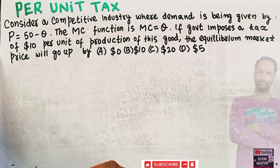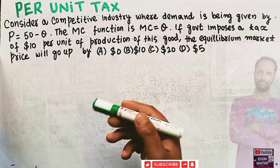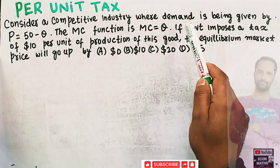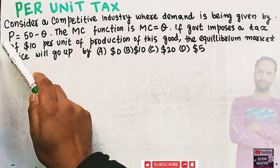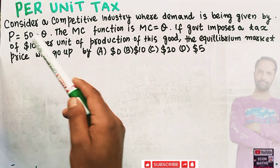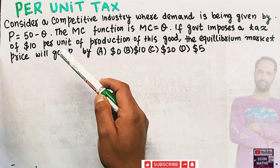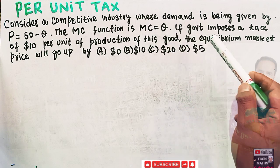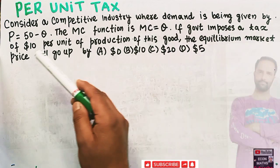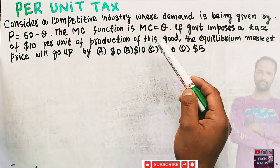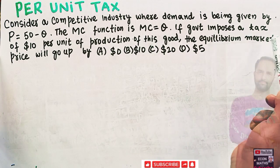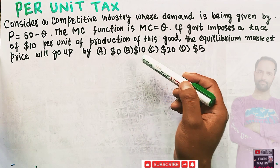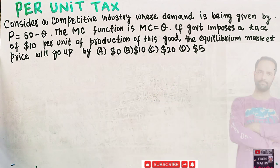In this video we will solve a numerical on the impact of per unit tax on the supply. The question is: consider a competitive industry where demand is given by P = 50 minus Q, where P is the price and Q denotes the quantity. The marginal cost function is given as marginal cost = Q. If the government imposes a tax of $10 per unit of production, the equilibrium market price will go up by how much? The options are: zero dollars, ten dollars, twenty dollars, or five dollars.